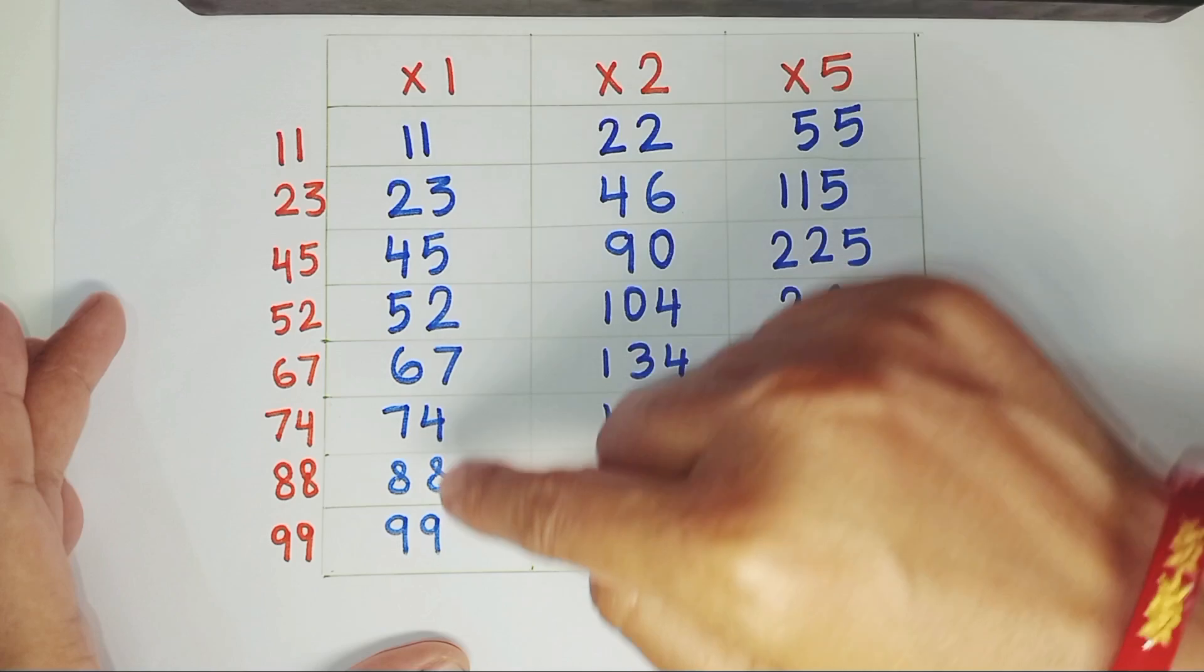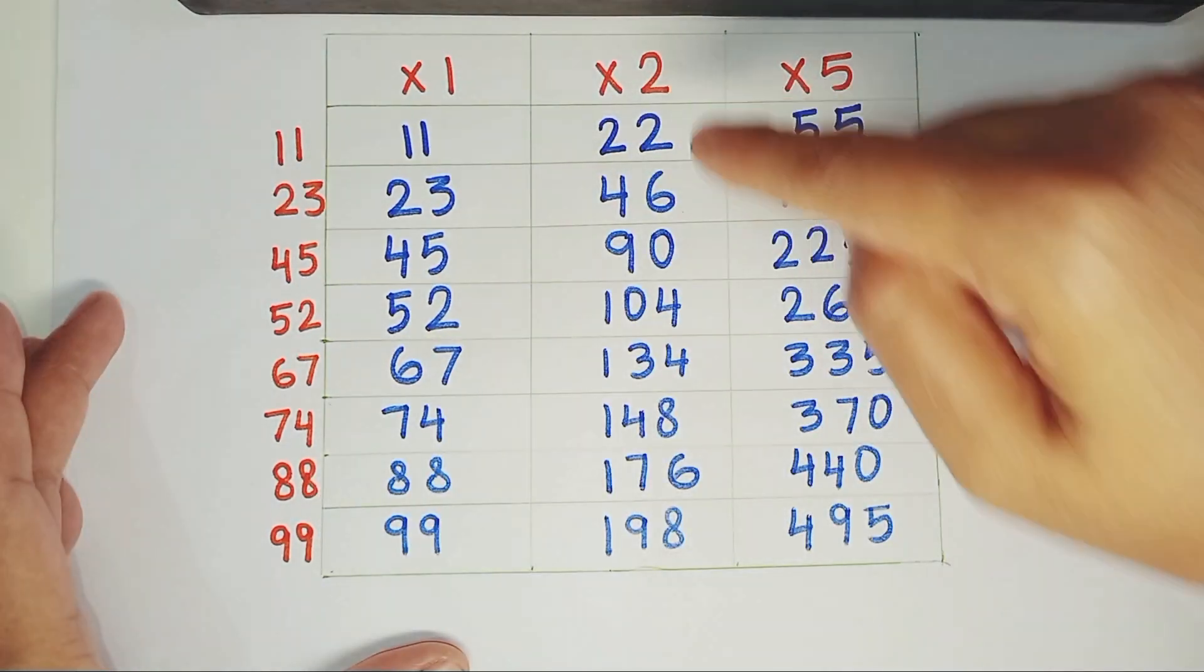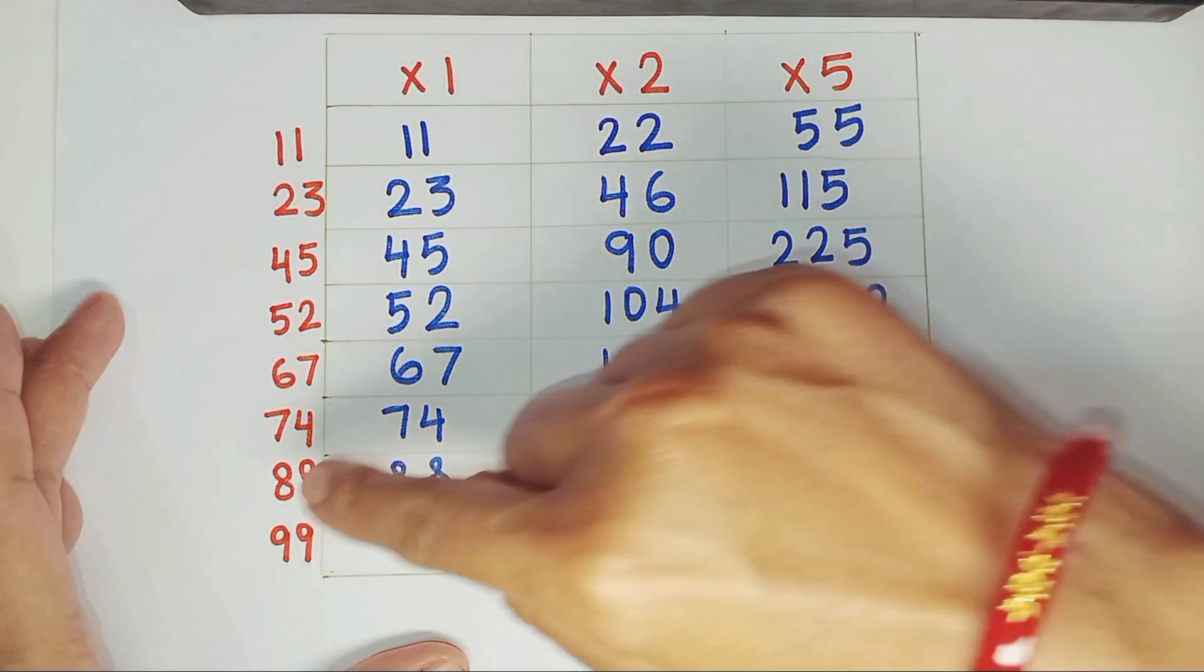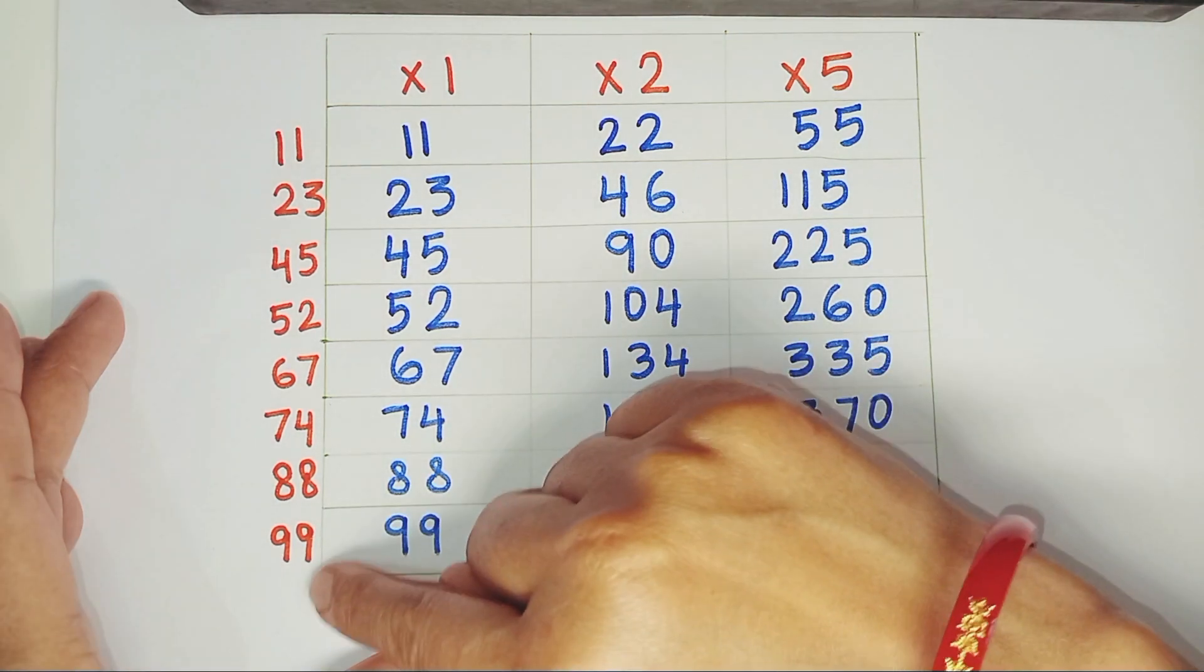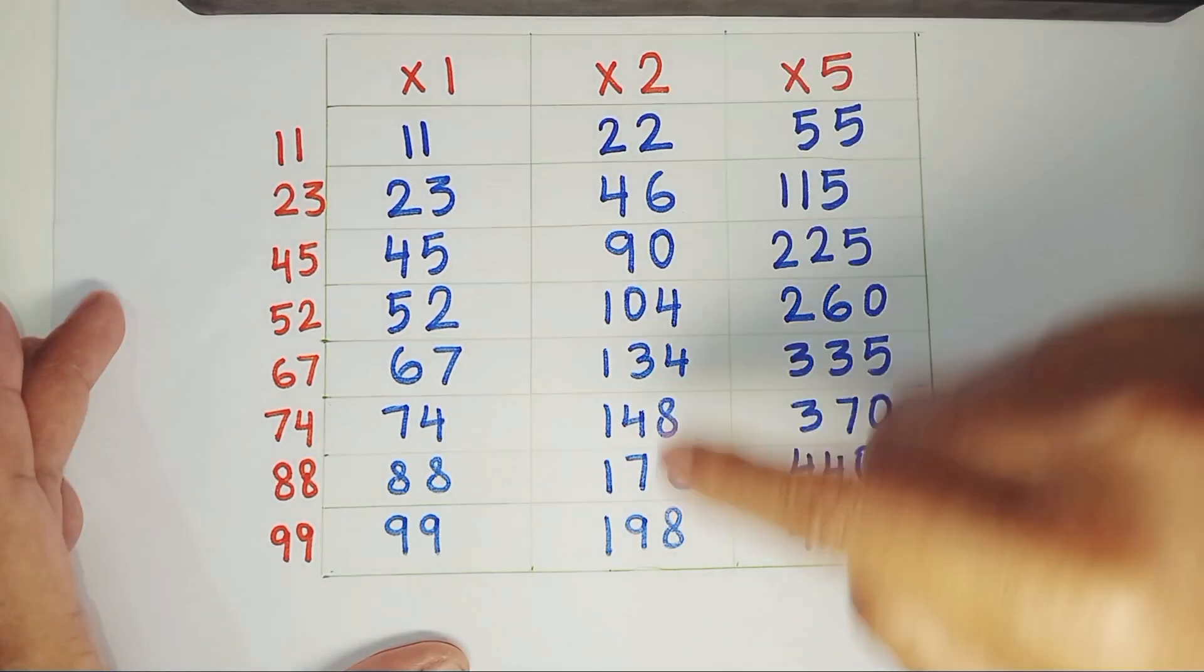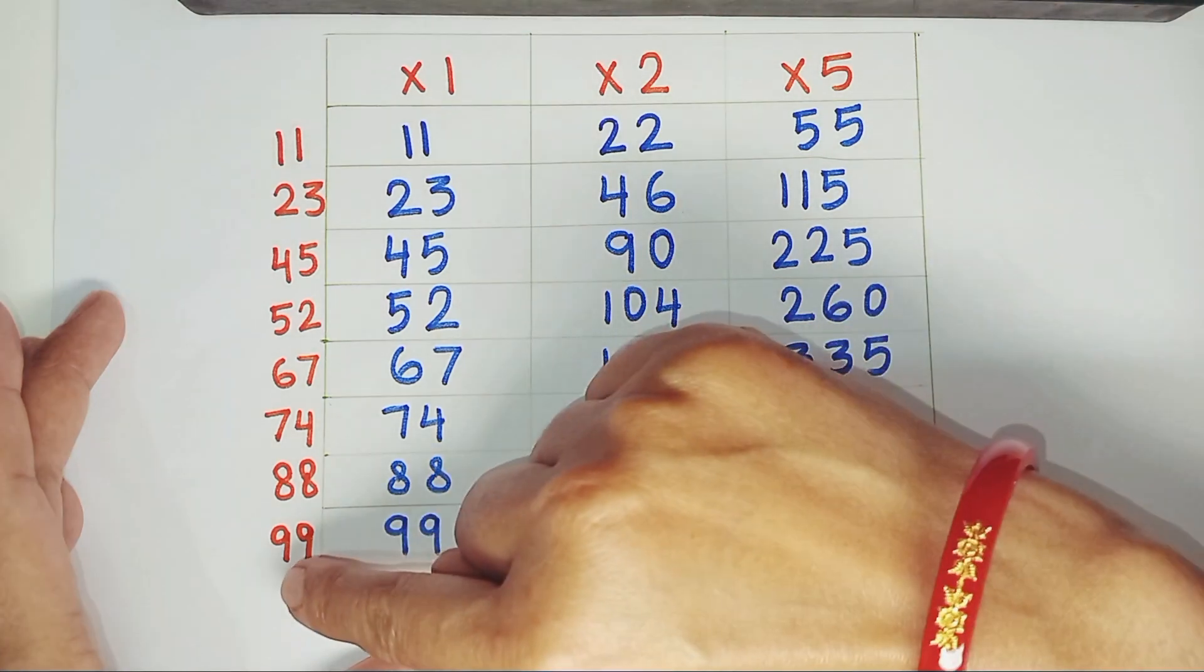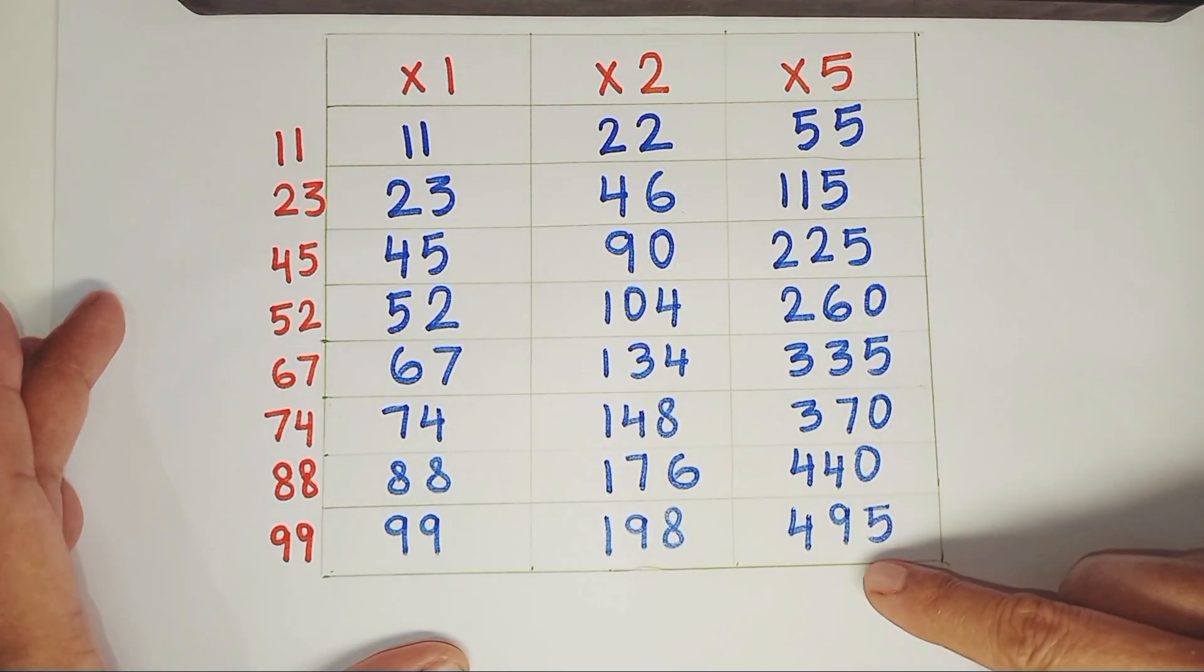88 times 1, 88. 88 times 2, 176. 88 times 5, 440. 99 times 1, 99. 99 times 2, 198. 99 times 5, 495.